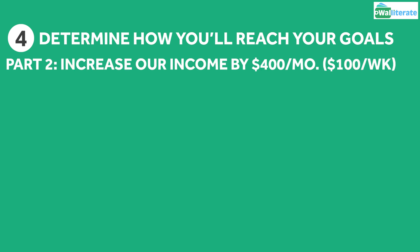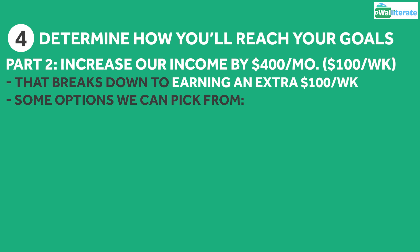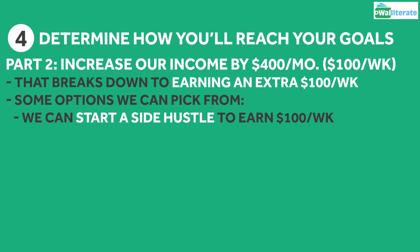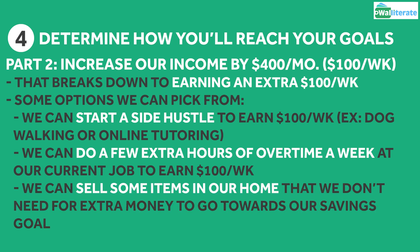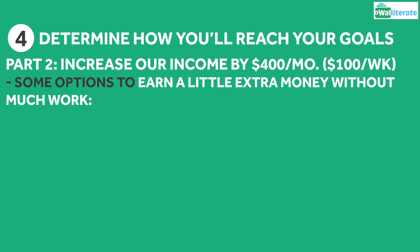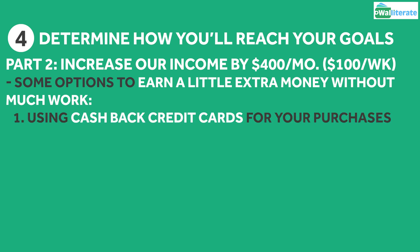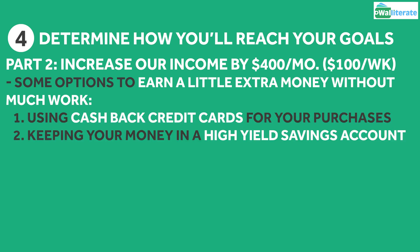For the remaining $400 a month, we'll look to increase our income. $400 a month breaks down to $100 a week in extra income. Maybe we'll start a side hustle to earn some extra money, like dog walking or online tutoring. Or perhaps we'll do a few extra hours of overtime a week at our current job, or sell items at home that we don't need.